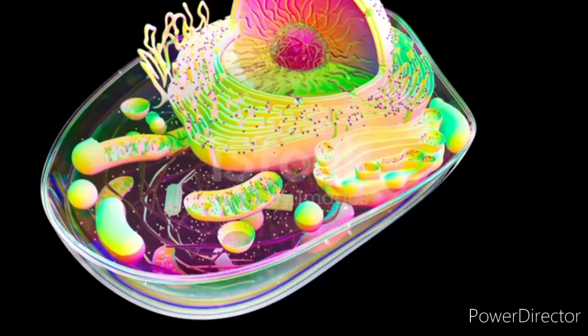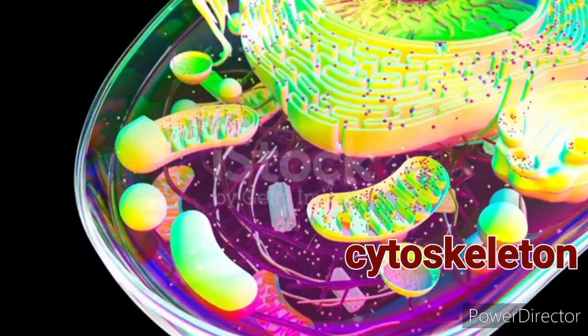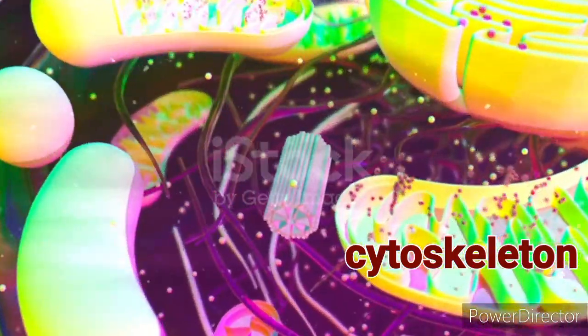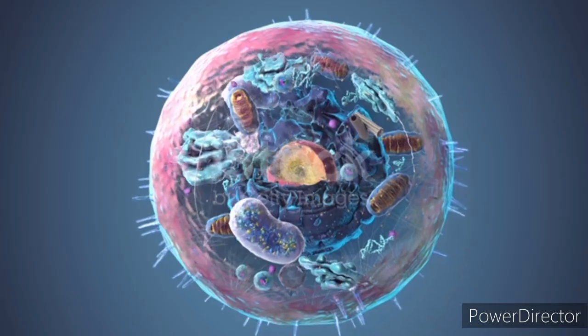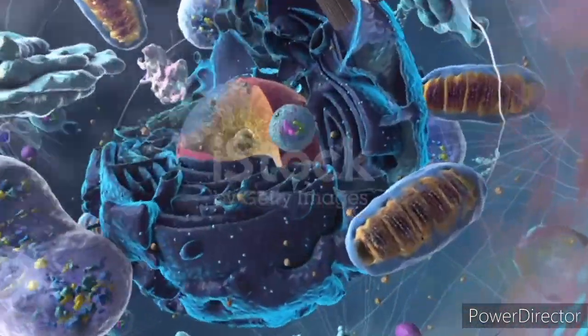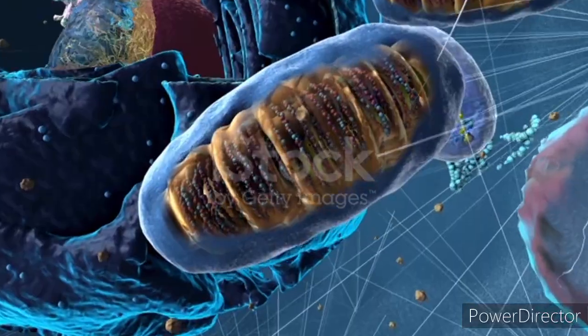The cytoskeleton is a complex network of filamentous proteins found in the cytoplasm of eukaryotic cells. It provides structural support, maintains cell shape, facilitates cell movement, and plays a crucial role in various cellular functions.